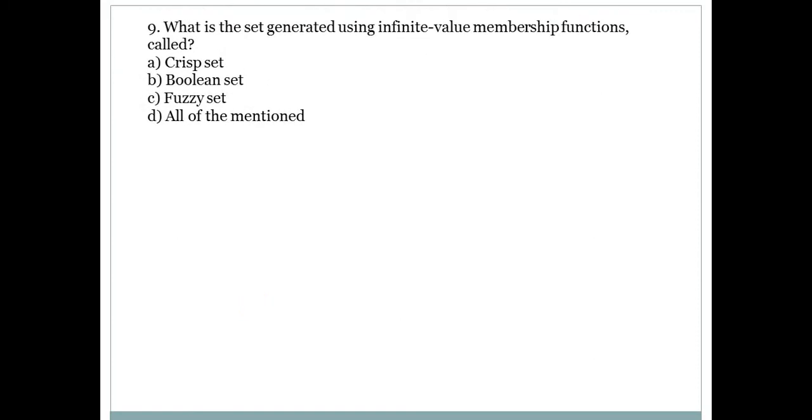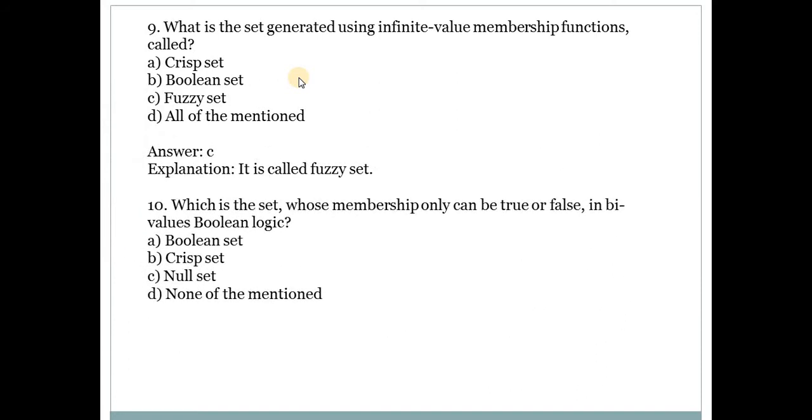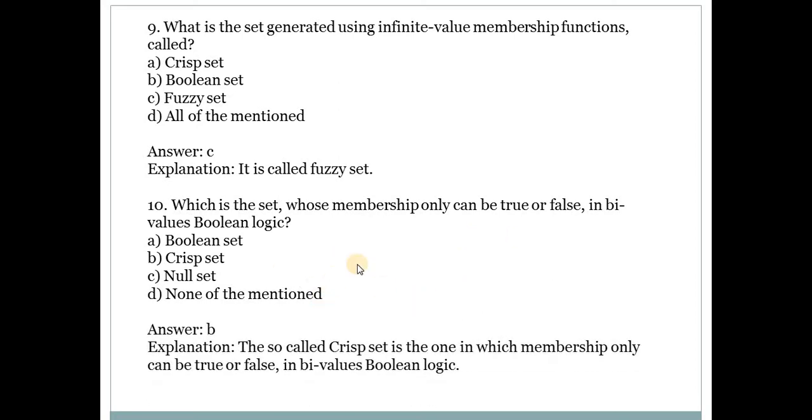Next one: What is the set generated using infinite value membership functions called? Answer is C, that is fuzzy set. Tenth question: What is the set whose membership only can be true or false in by values Boolean logic? Answer is B, crisp set. That is the traditional set. This is the set in which membership only can be true or false because it has two Boolean values.